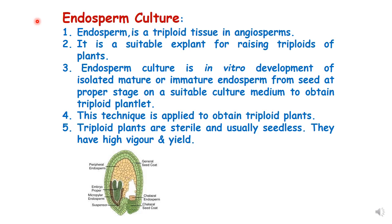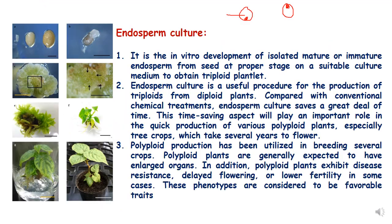An added advantage of triploid plants is that along with being seedless, they have high yield and vigor due to the extra set of chromosomes. Endosperm culture is the in vitro development of isolated mature or immature endosperm from seeds at a proper stage on a suitable culture medium to obtain a triploid plantlet. It is a useful procedure for the production of triploids from diploid plants — we can make a triploid plant from a diploid plant by culturing endosperm under artificial conditions.